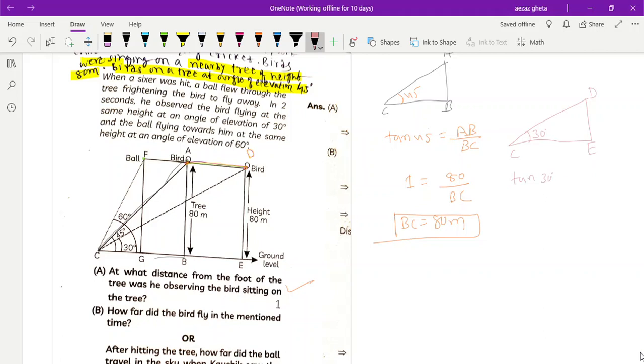Tan 30 degrees is equal to opposite side by adjacent side. So tan 30 is 1 by root 3. DE, the height of the tree is 80, and CE we need to find. So CE is equal to 80 root 3.